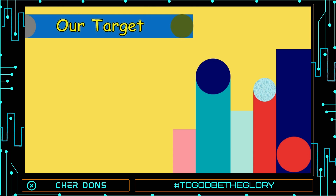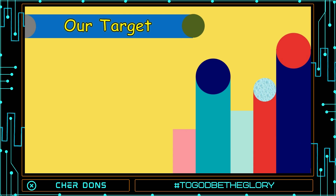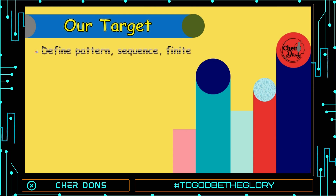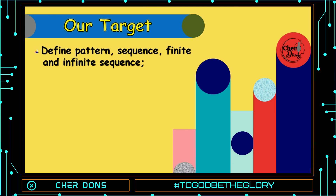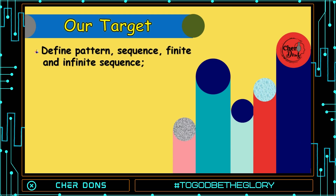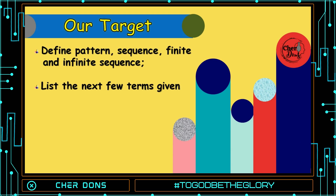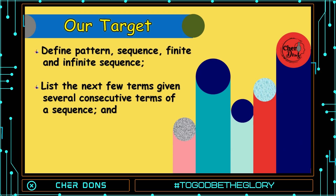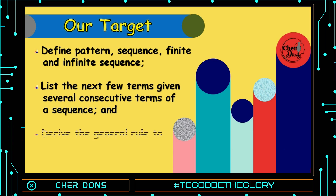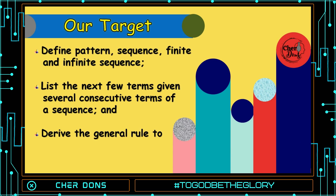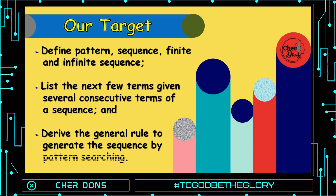Our target for today: we're going to define pattern, sequence, finite, and infinite sequence. Then, list the next few terms given several consecutive terms of a sequence, and derive the general rule to generate the sequence by pattern searching.